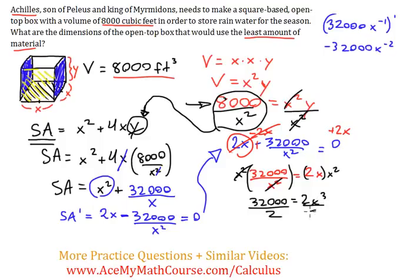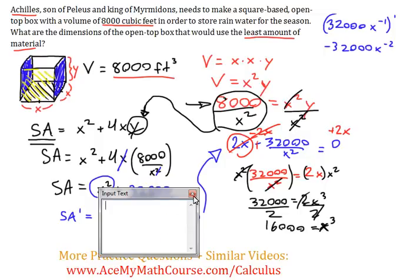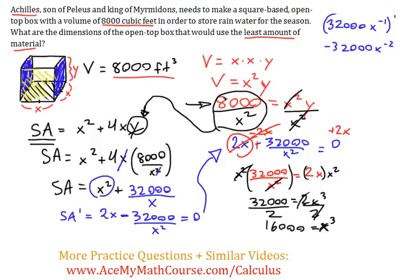I want to isolate x, so I'll divide both sides by 2. So, I get 16,000 equals x cubed. Now, what shall we do? Obviously, we're going to take the cubic root of both sides of the equation. And, the cubic root of 16,000 is 10 cubic root of 16. And, I'll plug that into the calculator to evaluate properly. And, we get approximately 25.198 feet.